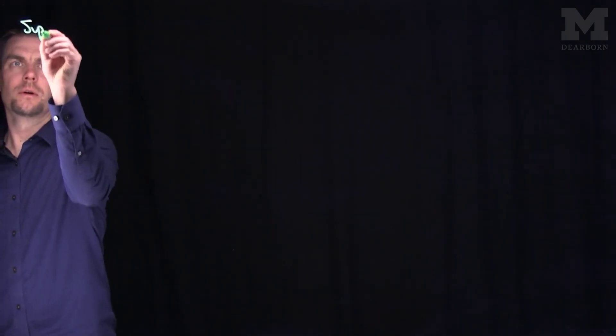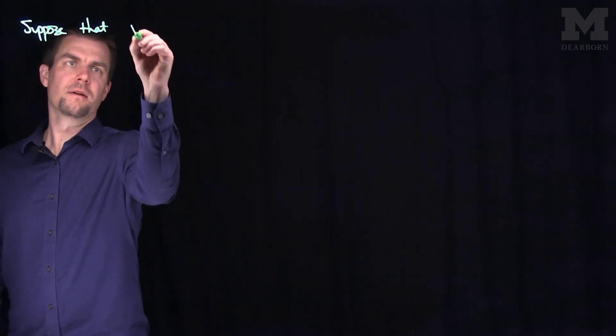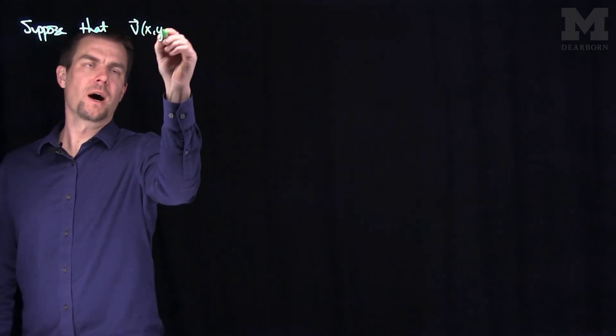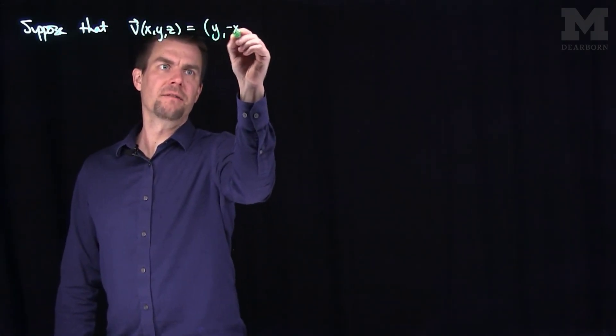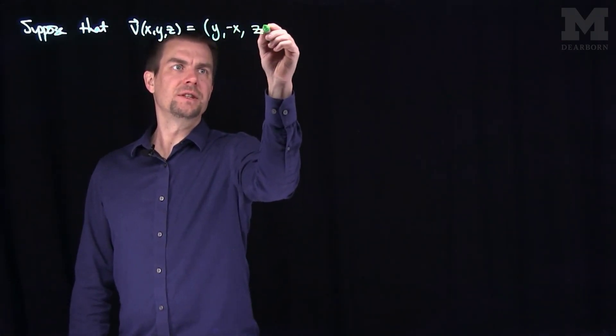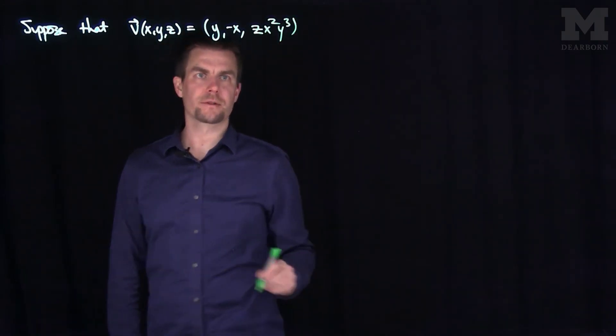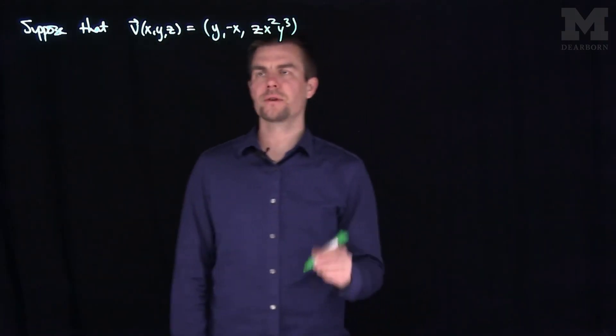Let's suppose that v of x, y, and z is y, negative x, and then z times x squared, y cubed. So that's my vector field, three-dimensional vector field.